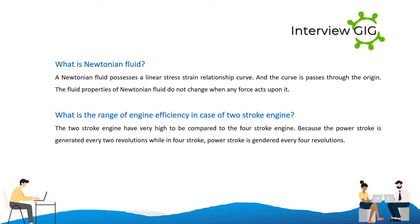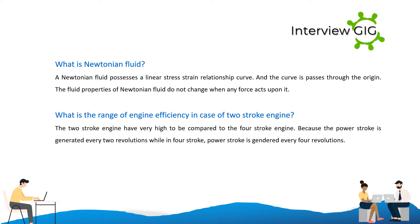What is a Newtonian fluid? A Newtonian fluid possesses a linear stress-strain relationship curve that passes through the origin. The fluid properties of a Newtonian fluid do not change when any force acts upon it.